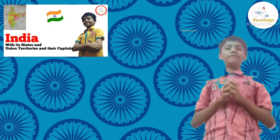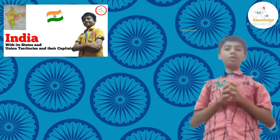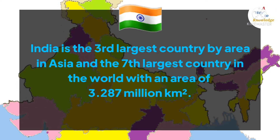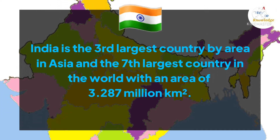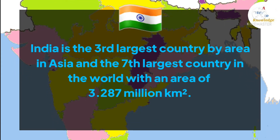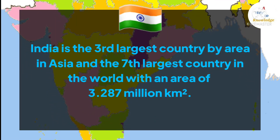I have already made a video on this topic about India, but that video didn't have such good pictures and good quality. So I am making the video on this topic again, and this time we will also learn about the official language of every state with the capitals. India is the third largest country by area in Asia and the seventh largest country in the world with an area of 3.287 million square kilometers.